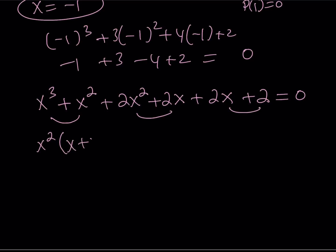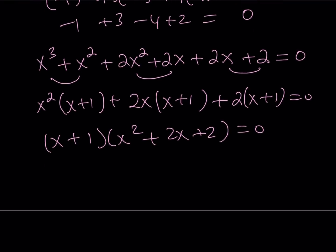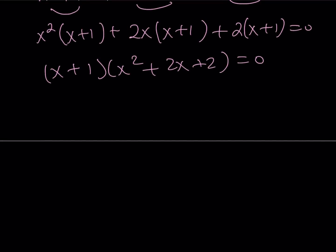So now you can factor by grouping: x²(x + 1) + 2x(x + 1) + 2(x + 1). x + 1 is a factor, and the other factor is x² + 2x + 2. So x = -1 is definitely a solution.